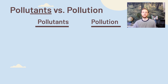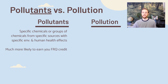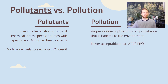We'll wrap up by looking at the difference between pollutants and pollution — a really important distinction and what I call the Achilles heel of the AP's FRQ writer. Many AP students lose points on FRQs when they vaguely describe pollution instead of naming a specific pollutant. Pollutants are specific chemicals or groups of chemicals that come from specific sources with specific human and environmental health consequences — much more likely to earn FRQ credit. Pollution is a vague, nondescript idea referring to any substance we don't want in the environment, and will almost never earn you credit. I have scored many AP FRQs and have never seen a rubric that awards a point for just saying 'pollution.'